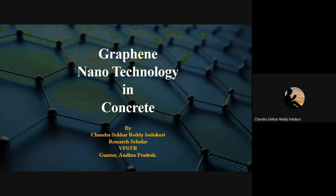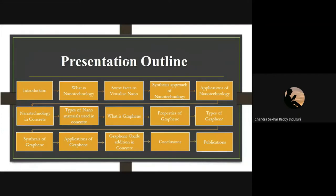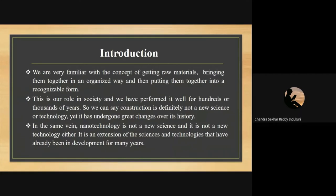Before knowing about graphene nanotechnology, we first need to know about nanotechnology. The outline of my topic covers: nanotechnology, different types of nanomaterials used in concrete, synthesis approaches for nanomaterials, then graphene — its structure, properties, and applications — and finally the necessity of graphene in concrete technology, followed by conclusions.